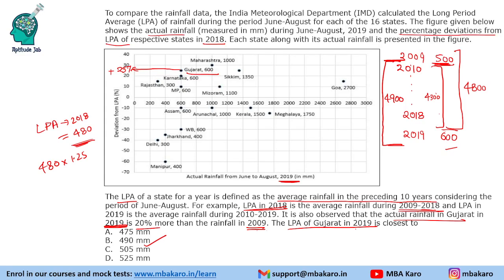In this set, three questions were super simple and just observation-based. The fourth one was the only one in which you had to read and understand the definition of LPA, do the calculations, and get the answer. This was the complete solution to the set.